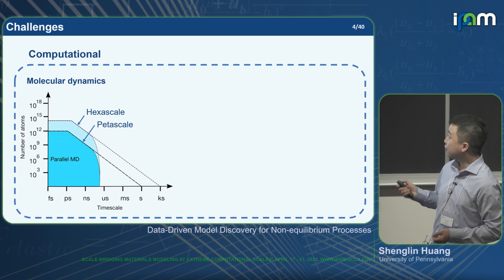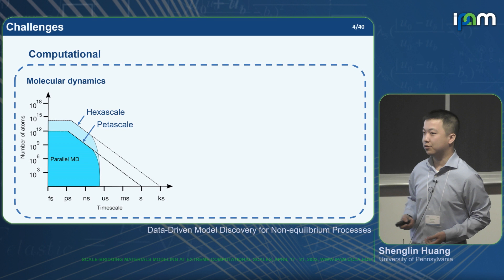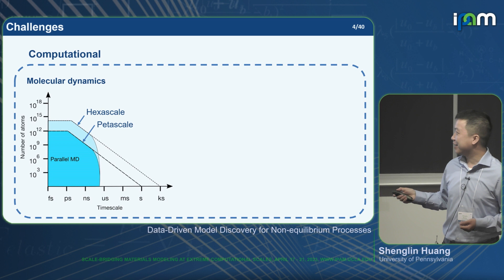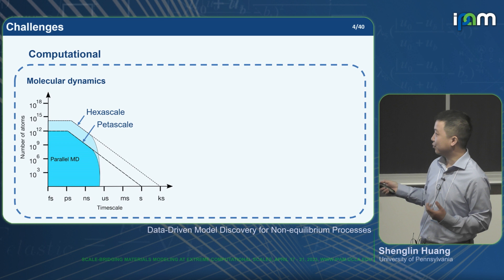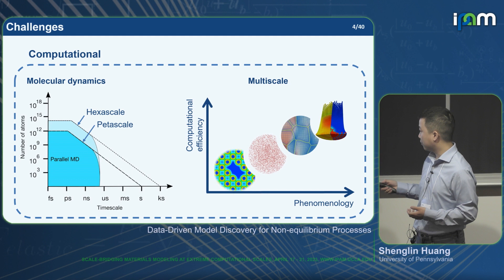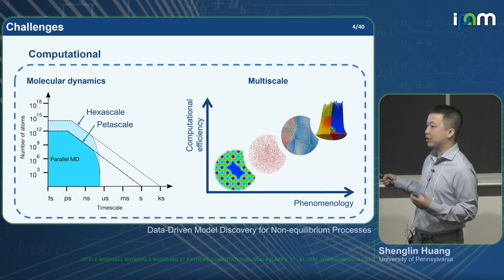Computationally, we can also do molecular dynamics to make predictions for non-equilibrium processes, or of course DFT. But molecular dynamics is largely limited by its time scale and length scale — it is even impossible to simulate a real system in real time and length scale from MD. When we do multi-scale modeling to increase computational efficiency, we usually need to propose many phenomenological assumptions, and we always need to keep in mind whether those assumptions truly agree with the underlying mechanism at the lower scale.